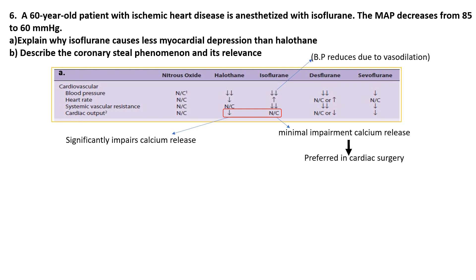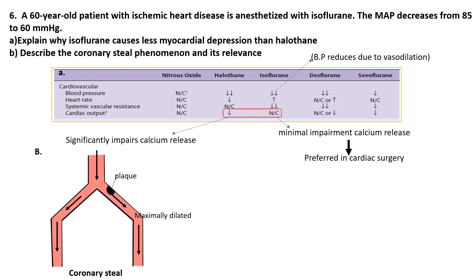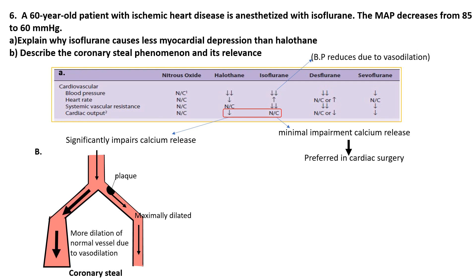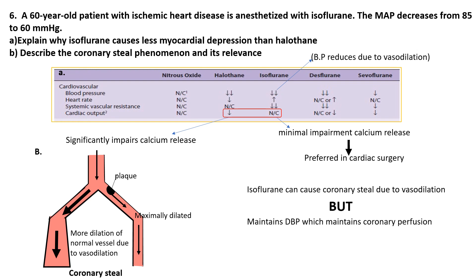The difference in calcium handling explains why isoflurane is generally safer for patients with heart conditions. Another reason is that halothane sensitizes the heart to catecholamines, increasing the risk of cardiac arrhythmia. Coronary steal occurs when vasodilation diverts blood flow away from narrowed or stenotic coronary arteries, worsening ischemia. Isoflurane is a vasodilating anesthetic that could theoretically cause coronary steal. However, it poses a lower risk than halothane because it better maintains coronary perfusion pressure, providing balanced vasodilation while preserving diastolic pressure essential for coronary flow.